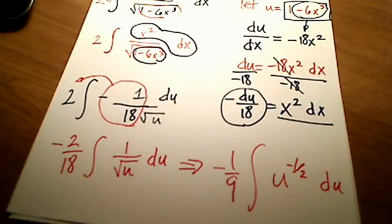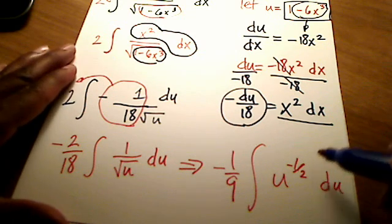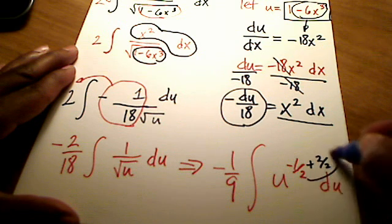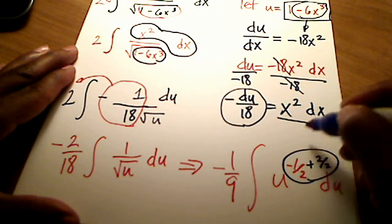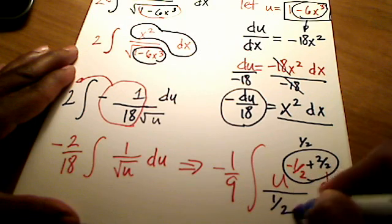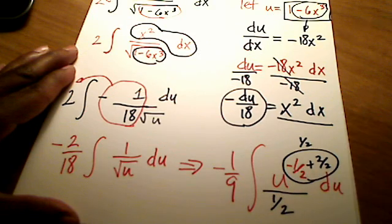So that looks a little bit more manageable. And now invoking our rules for anti-derivatives here for integration. We're simply going to add 1 to this exponent here, which now gives us a positive 1 half. And that positive 1 half moves to the denominator. It goes there as well.